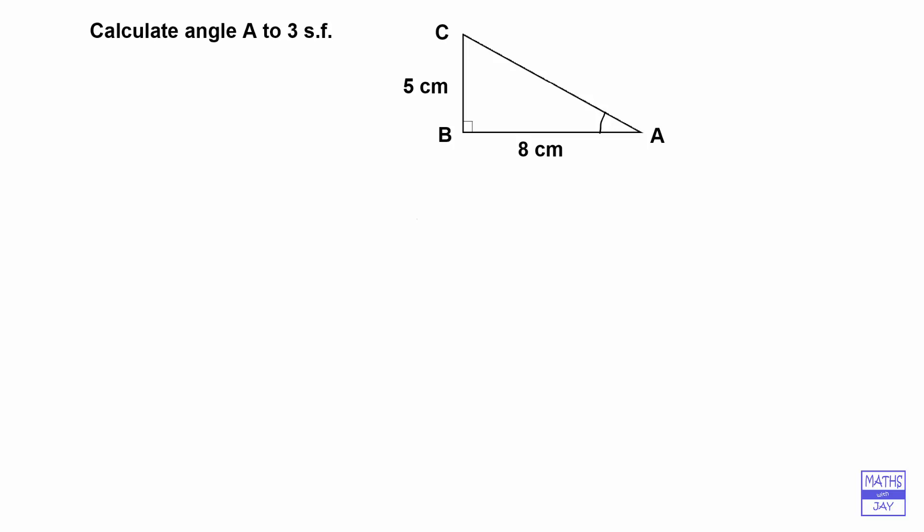When an angle is involved in a right-angled triangle, we want to use trigonometry. So that means we are expecting to use either sine, cosine, or tangent.